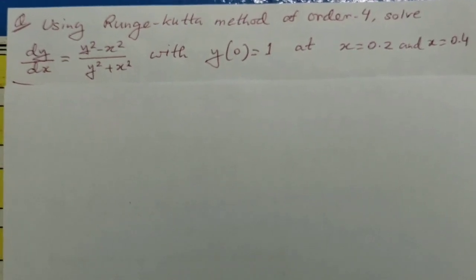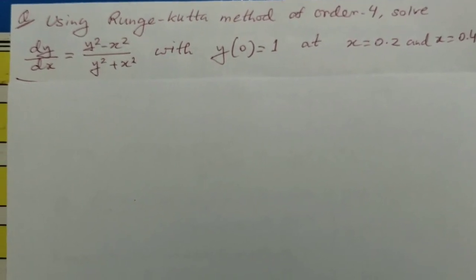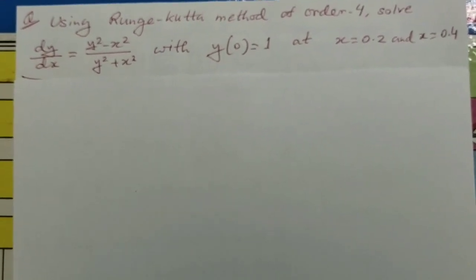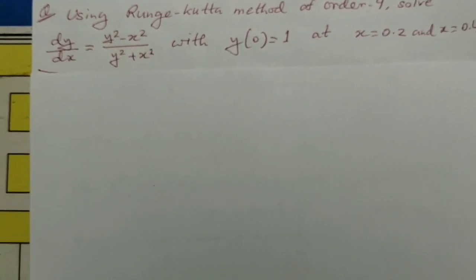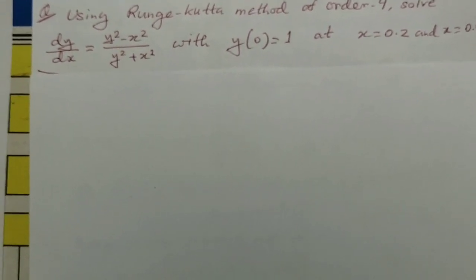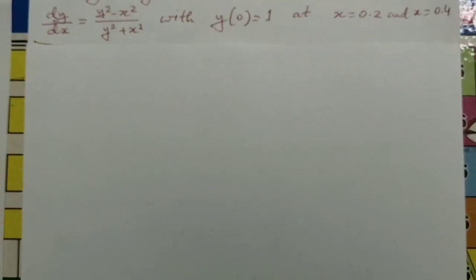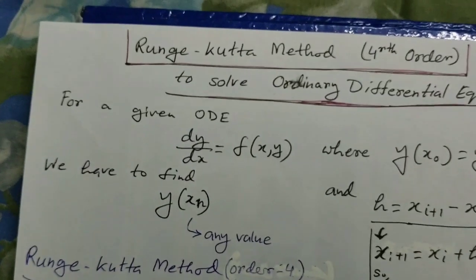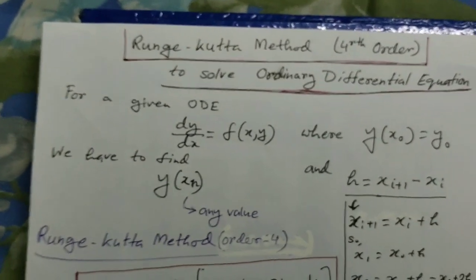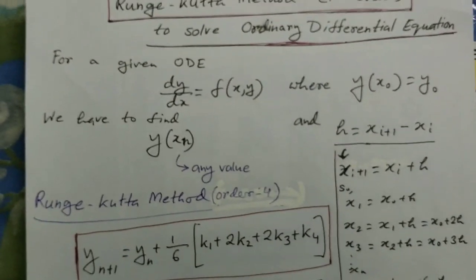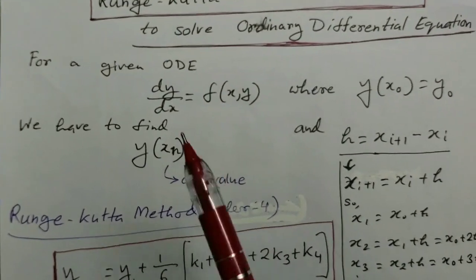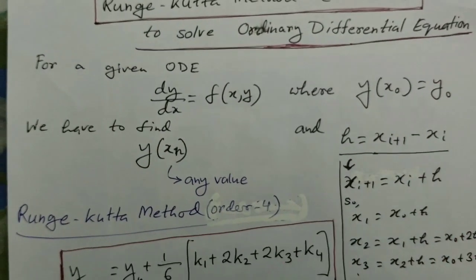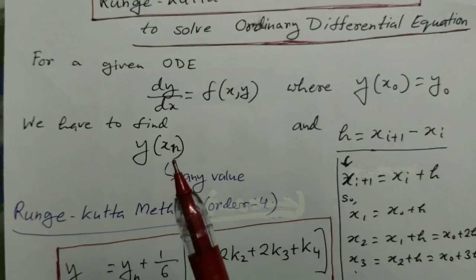Before solving this problem, let us first quickly review the Runge-Kutta method of fourth order. The Runge-Kutta method of fourth order is a numerical technique to solve ordinary differential equations of the form dy/dx = f(x, y), where y(x₀) = y₀ and we have to find y(xₙ) for any value of x.